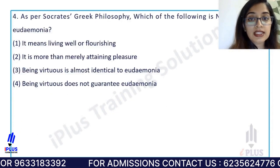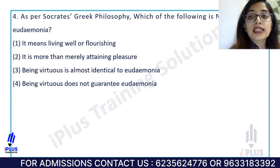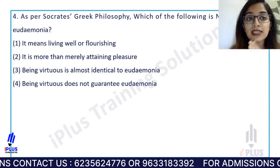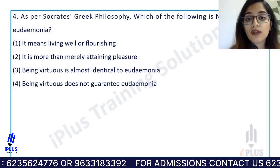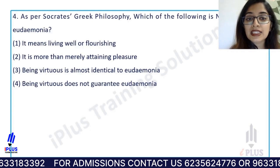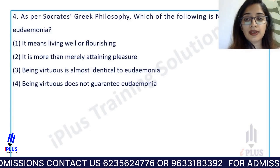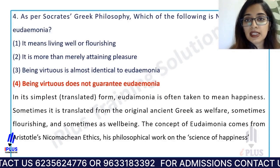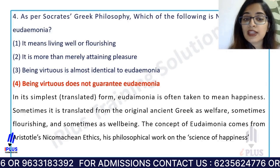As per Socrates's Greek philosophy, which of the following is NOT true about eudaimonia? Eudaimonia means living well or flourishing. It is more than merely attaining pleasure. Being virtuous is almost identical to eudaimonia. Eudaimonia simply means happiness, and sometimes it translates as welfare, flourishing, or well-being.